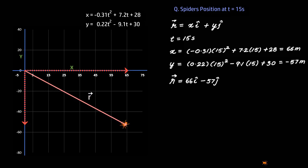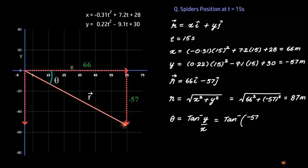The second question is what is the magnitude of this position from the origin, that is the length of this position vector, and also the angle this position vector makes with the x-axis. The magnitude will be r = √(x² + y²) = √(66² + (-57)²) = 87 meters. The direction will be θ = tan⁻¹(y/x) = tan⁻¹(-57/66) = -41 degrees.